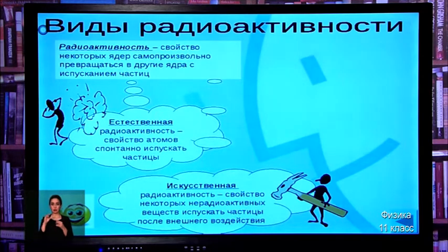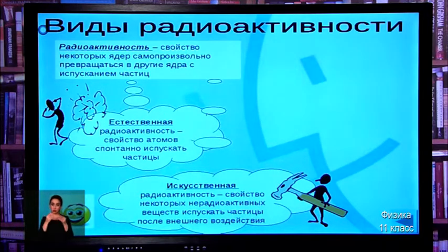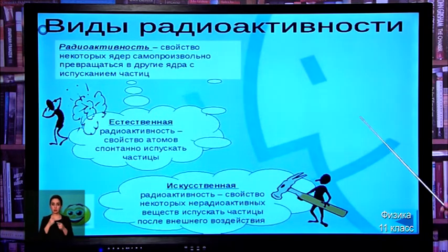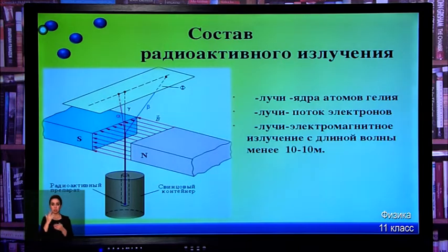Radioactivity is the spontaneous emission of particles from an atomic nucleus. Natural radioactivity is the spontaneous decay of particles, while artificial radioactivity involves induced nuclear reactions. As we discussed in the last lesson, when radioactive radiation passes through a magnetic field, it splits into three types of particles.